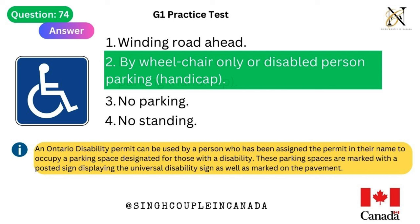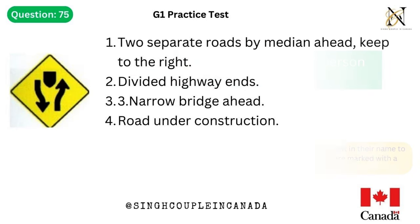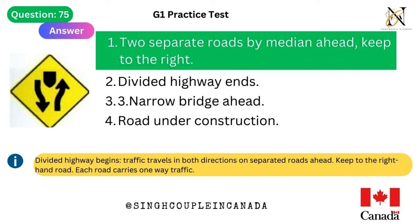Question 75. This traffic sign means: 1. Two separate roads by median ahead, keep to the right. 2. Divided highway ends. 3. Narrow bridge ahead. 4. Road under construction. Answer is 1. Two separate roads by median ahead, keep to the right. Divided highway begins — traffic travels in both directions on separated roads ahead. Keep to the right-hand road. Each road carries one-way traffic.